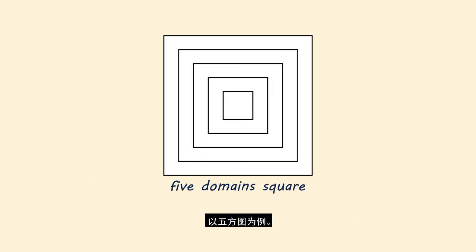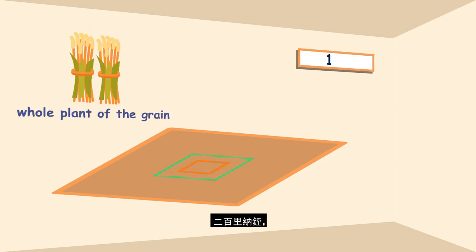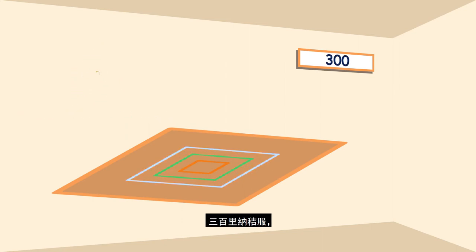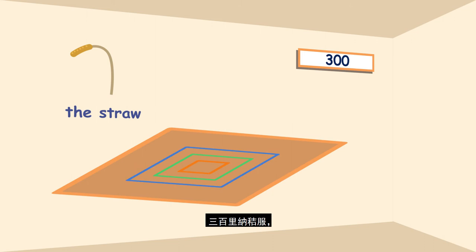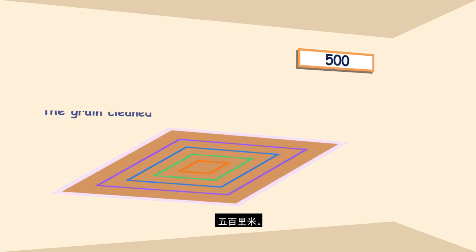Take the five domains square for instance. 500 Li formed the domain of the sovereign. From the first hundred, they brought as revenue the whole plant of the grain. From the second, the ears, with a portion of the stock. From the third, the straw, but the people had to perform various services. From the fourth, the grain in the husk. And from the fifth, the grain cleaned.